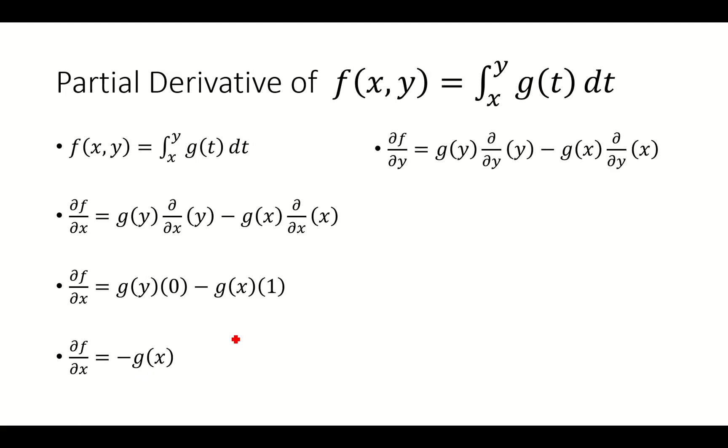Now to take the derivative with respect to y, we're still going to do the same thing, but now we're taking the derivative with respect to y, and the derivative with respect to y of y is 1, the derivative with respect to y of x is 0, so simplifying this, we get the derivative with respect to y is g of y, and that is our answer.